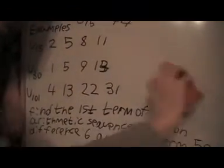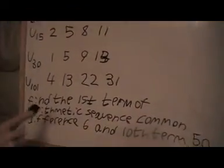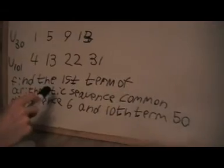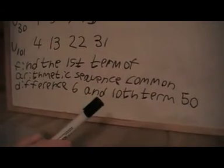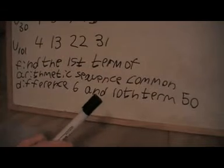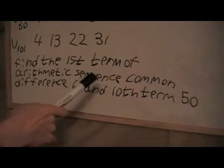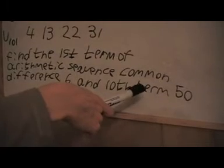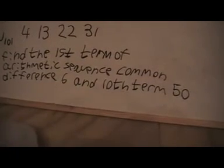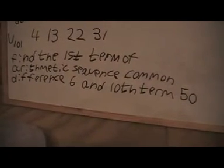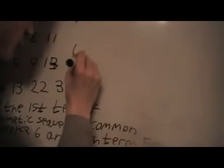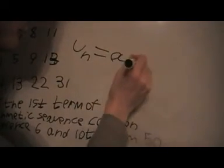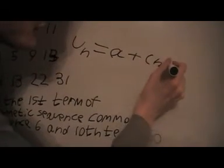So this last problem here, we can read what it says: we want to find the first term of an arithmetic sequence. The common difference is 6 and the 10th term is 50. So basically this is what we know.